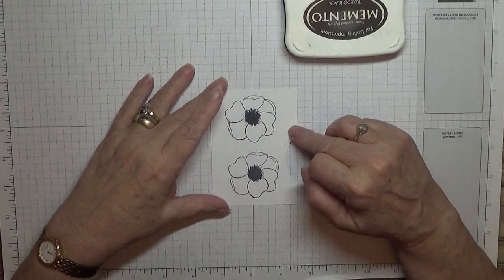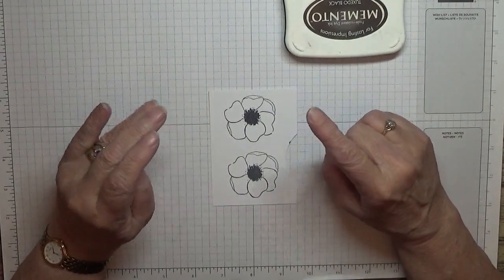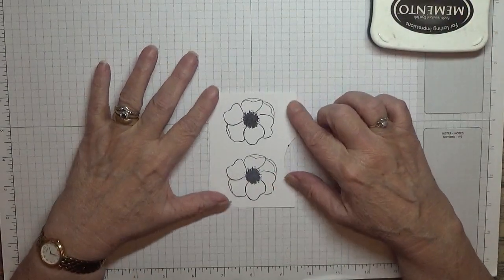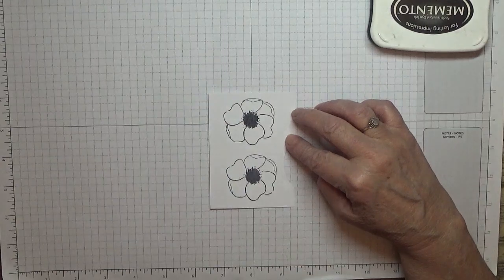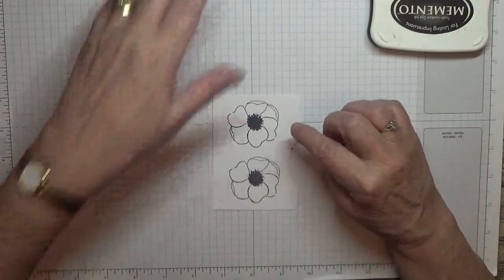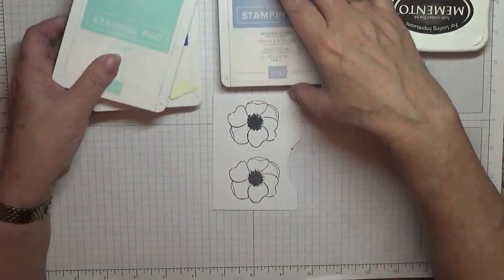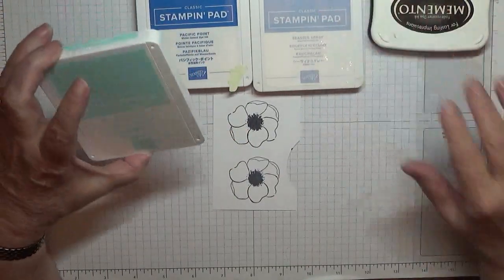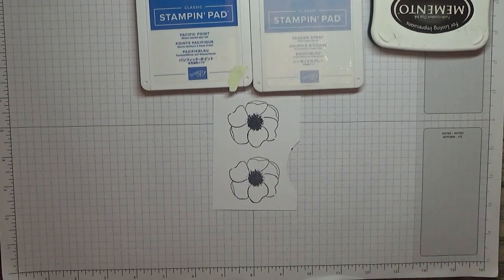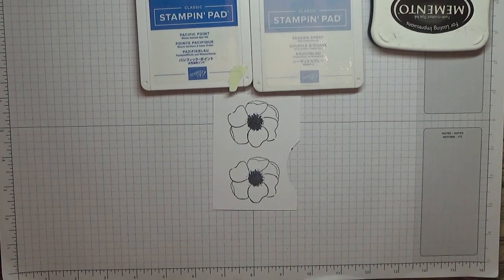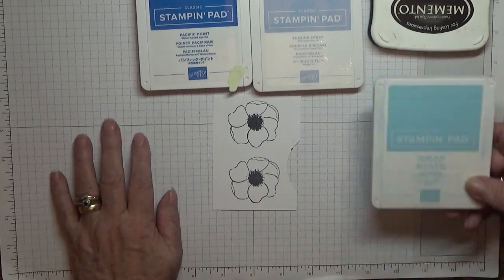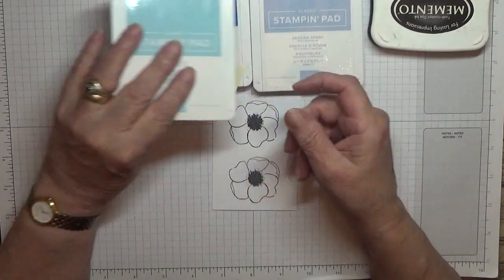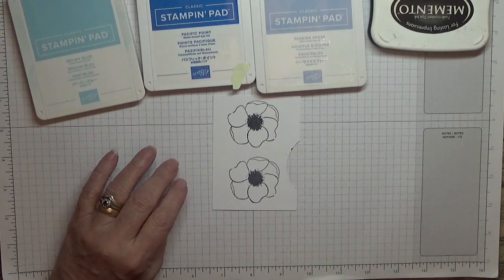She used the Wild Rose on her flowers, but I don't have that, so I thought, what can I use? And this is what I came up with: Painted Poppies. Stamp that. Now we're going to fill it in. I've got some blues here. Obviously we're going to use Seaside Spray. I want a darker blue. Well, that's Pool Party. Hang on, let me go and get the other one.